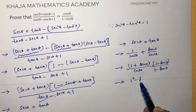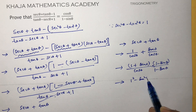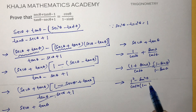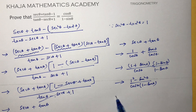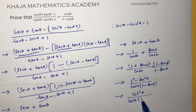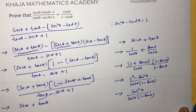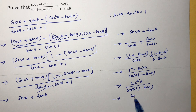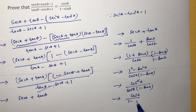So we get a² - b², which is 1 - sin²θ, over cos θ into (1 - sin θ). Since 1 - sin²θ = cos²θ, this becomes cos²θ over cos θ(1 - sin θ). One cos cancels, giving cos θ / (1 - sin θ), which is the RHS. Hence proved.